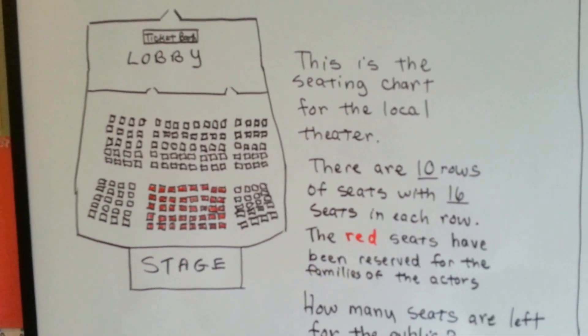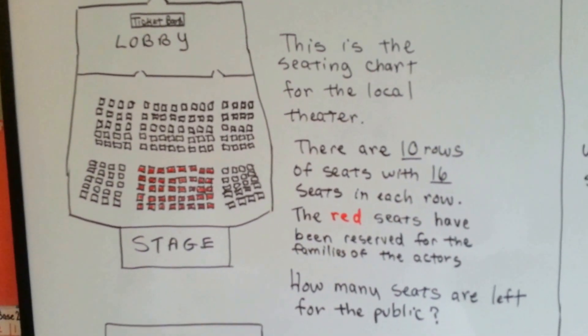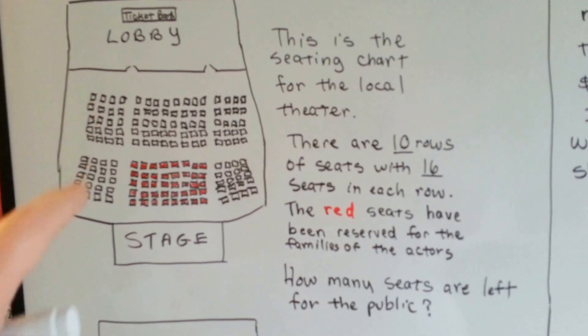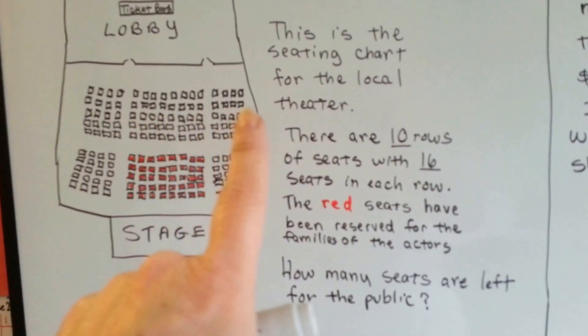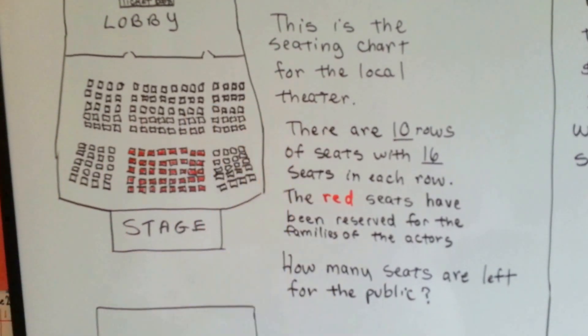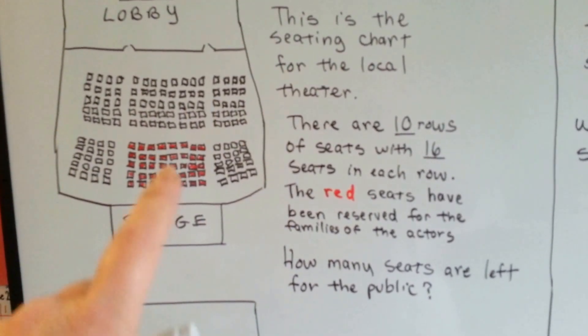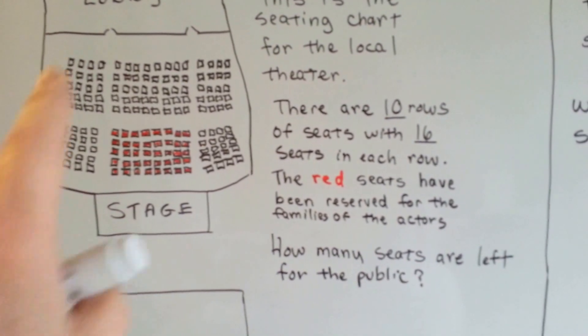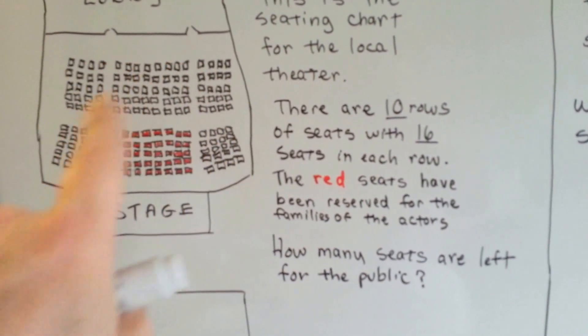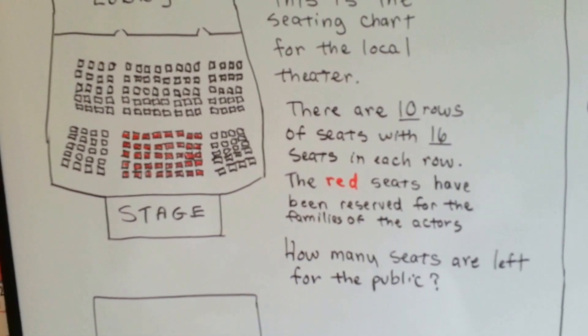So this is the seating chart for the local theater. There's ten rows of seats. There's five and then five, with 16 seats going across this way. The red seats have been reserved for the families of the actors. So how many seats are left for the rest of the public to come in and watch the show?